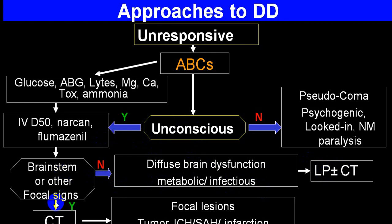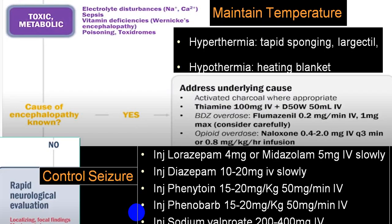Then go for investigations. If suspecting infective pathophysiology, lumbar puncture and CT scan. If there are focal signs, again go for CT scan and identify etiology like tumor or intracranial pathophysiology. In any unconscious patient, always try to find electrolyte imbalance, sepsis, Wernicke's encephalopathy, poisoning, toxins. If there is elevated body temperature, tepid sponging and you can utilize chlorpromazine. If hypothermia, use heating blankets. In poisoning, activated charcoal can be utilized. For barbiturate overdose, flumazenil; for opium toxicity, naloxone (Narcan).